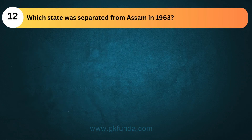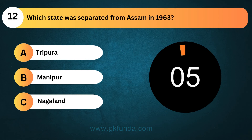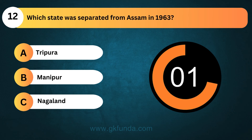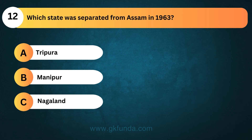Which state was separated from Assam in 1963? The answer is option C, Nagaland. It was the first state to be separated from Assam.